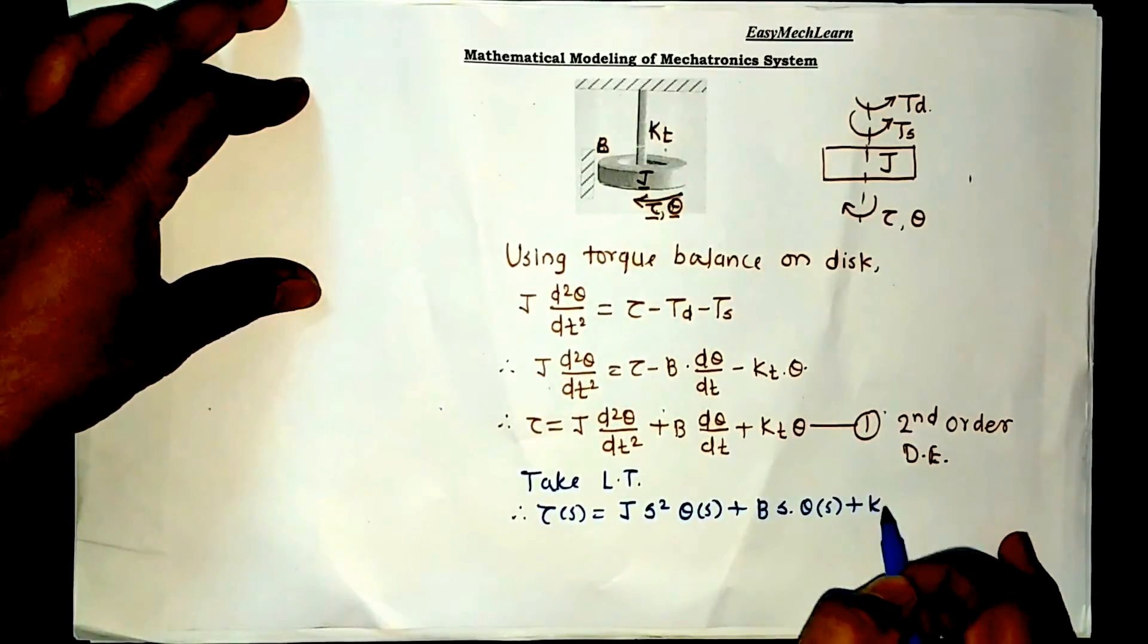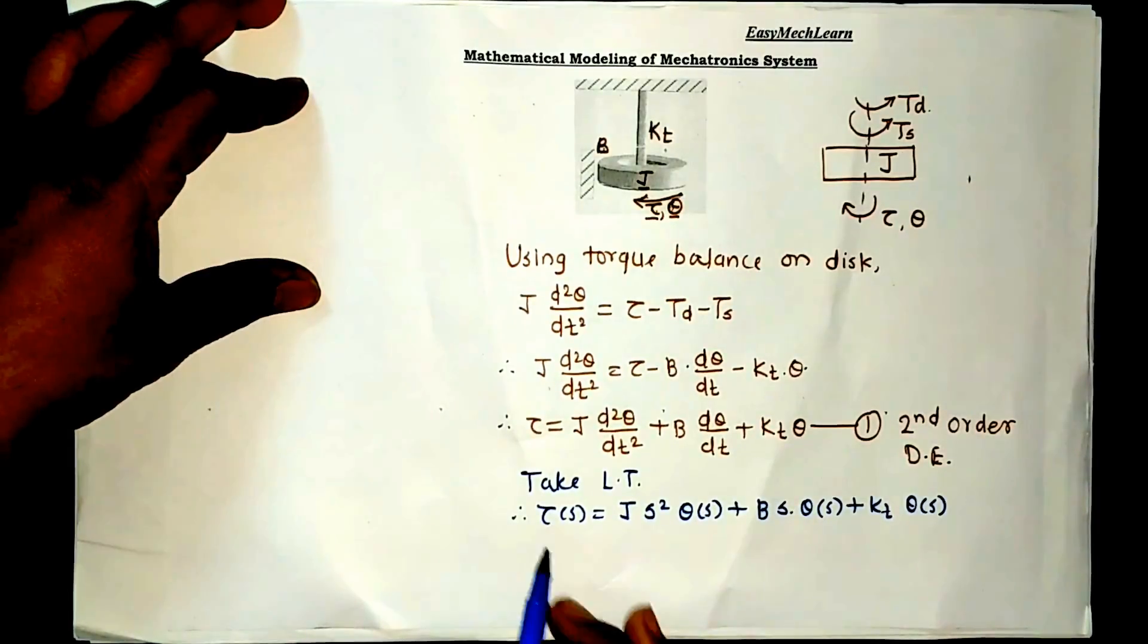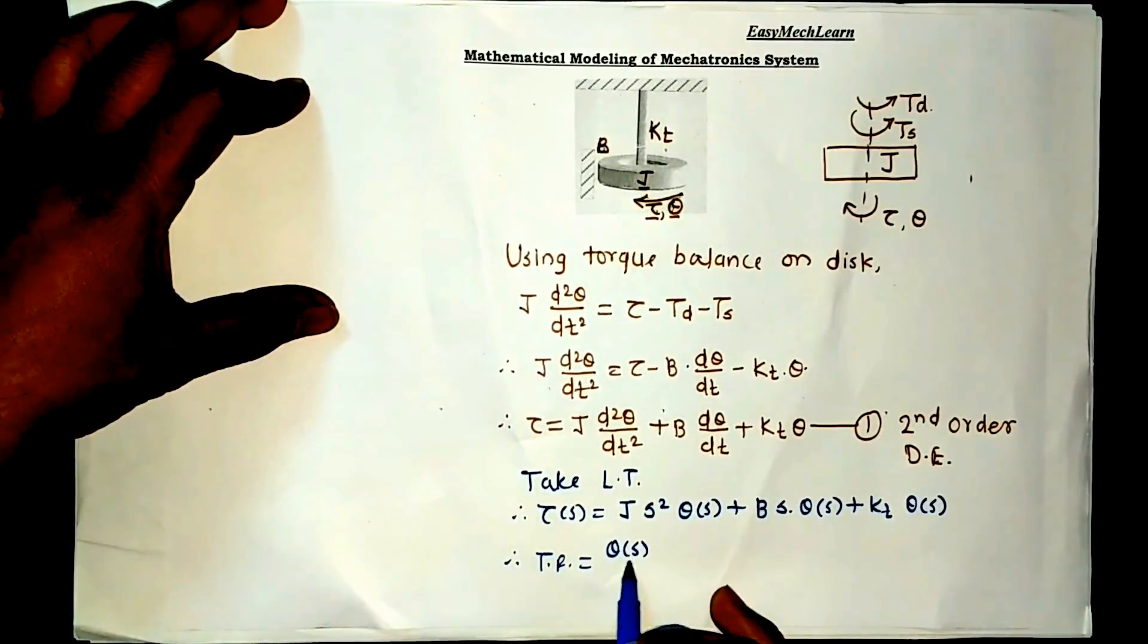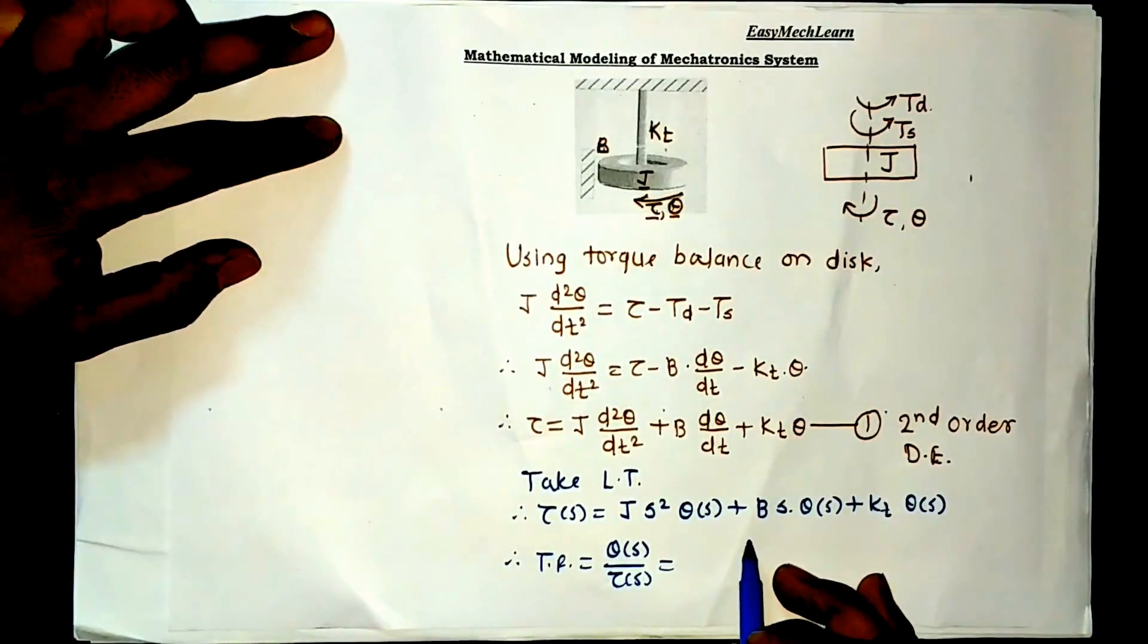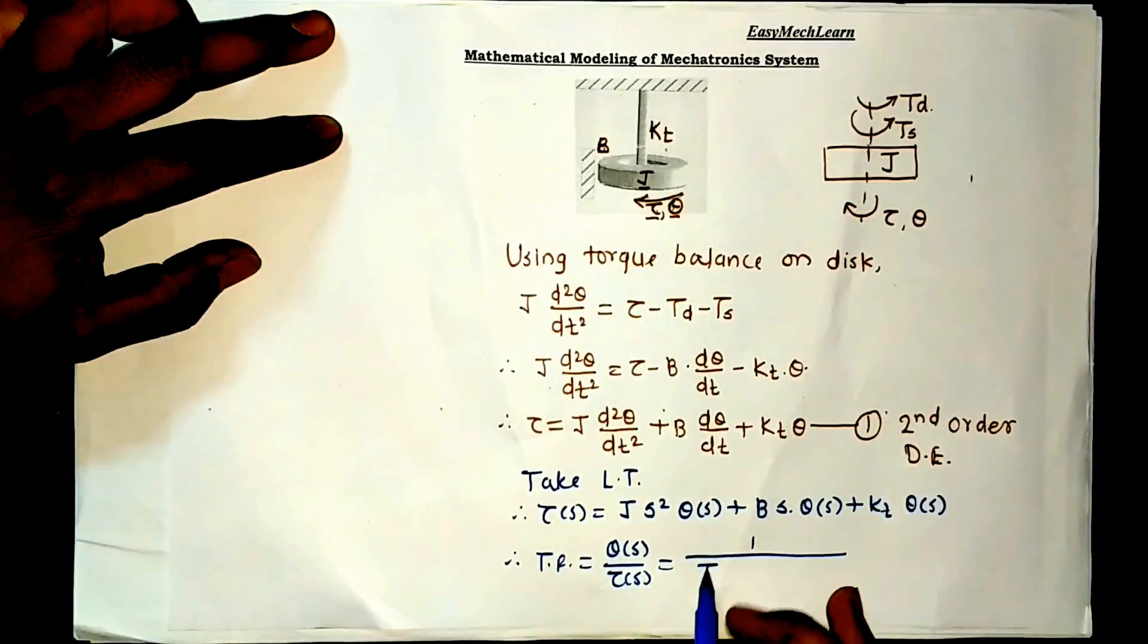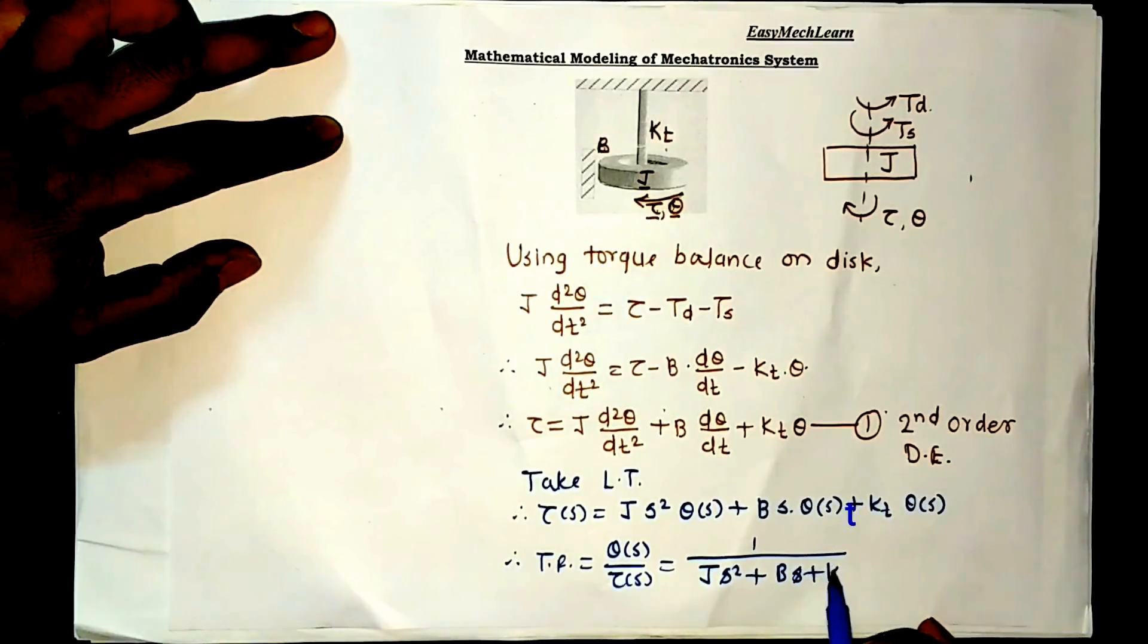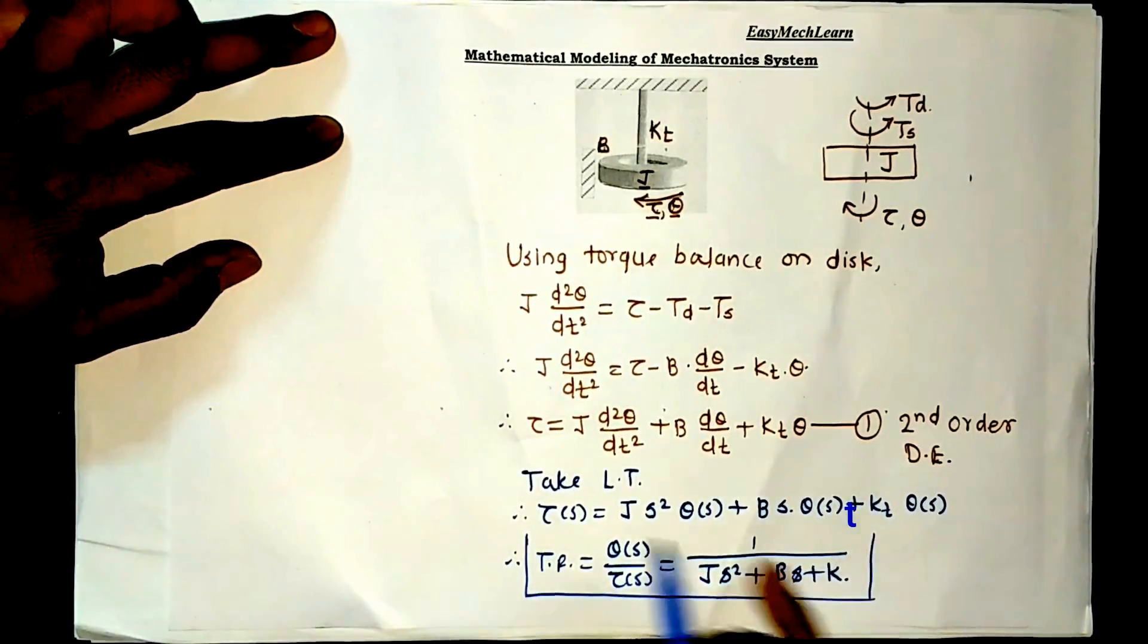Now transfer function is equal to Laplace of output, that is theta of s, divided by Laplace of input, that is tau of s: 1 upon Js square plus Bs plus Kt. This is the transfer function for the rotational motion for mechanical system. Thanks for watching this video.